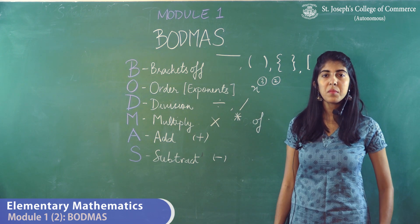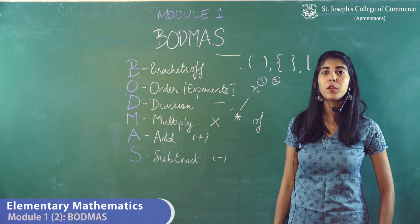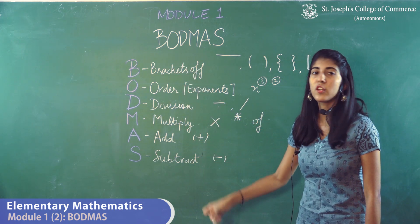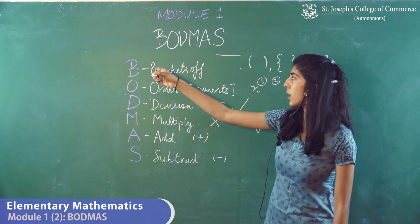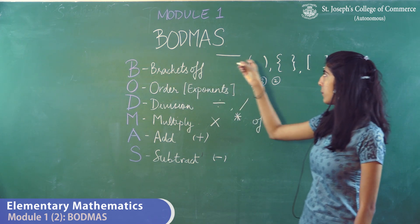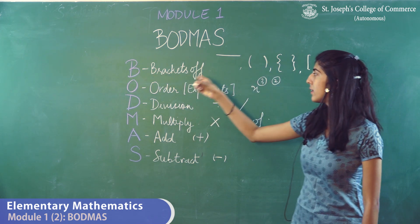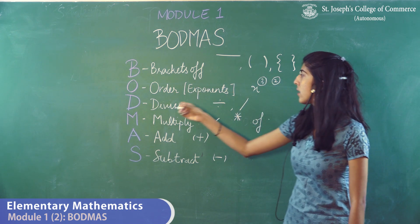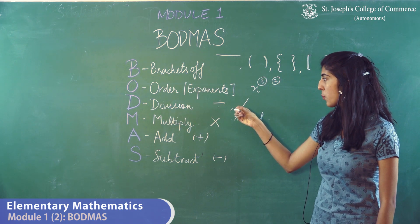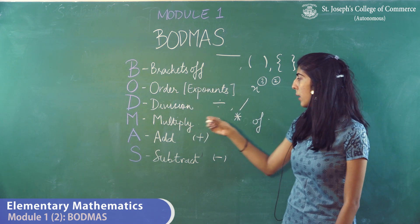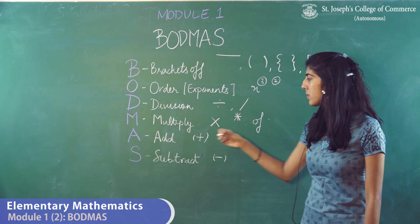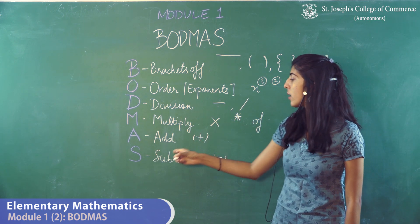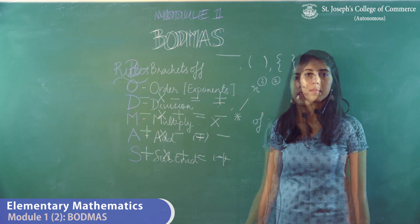When you're solving sums under BODMAS, you need to ensure that you follow this order to get the right answer. You start off by removing the brackets, then solving the exponents, then dividing anything that needs to be divided, multiplying the terms, adding any terms that have a plus sign, and then subtracting the remaining terms.